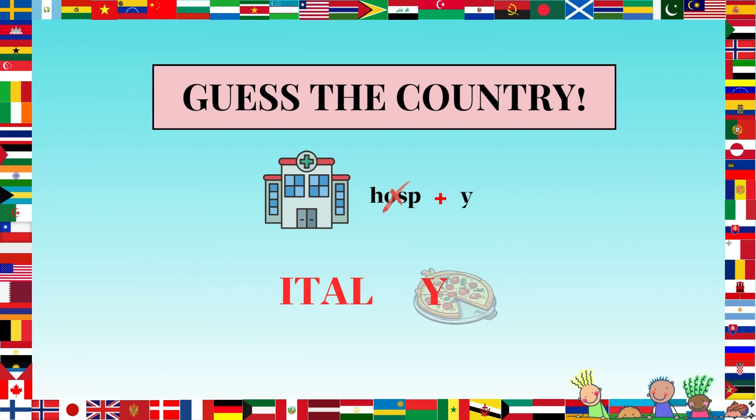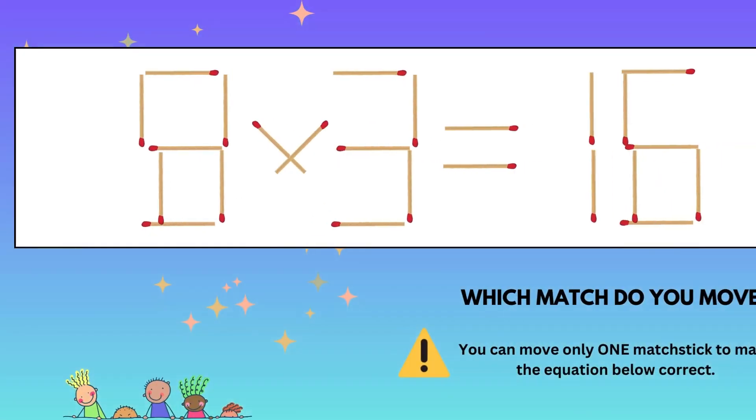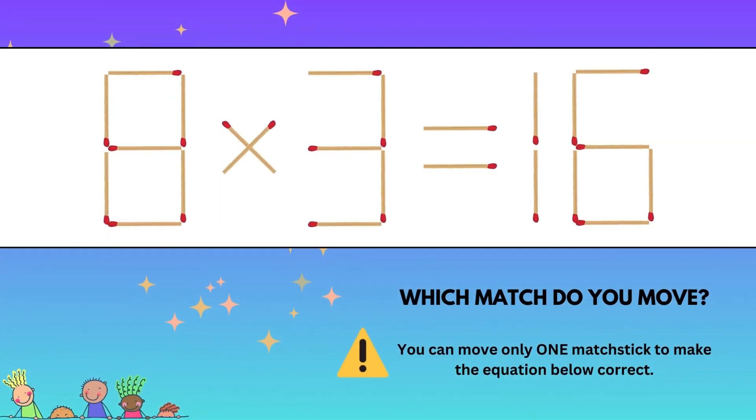That was way too easy, wasn't it? Well then, let's do something harder. This is a matchstick puzzle. Eight times three isn't sixteen. Your job is to find one matchstick and move it somewhere else to fix this equation. You cannot take a matchstick completely away, and you definitely cannot use it to simply cross out the equal sign. Can you do it?